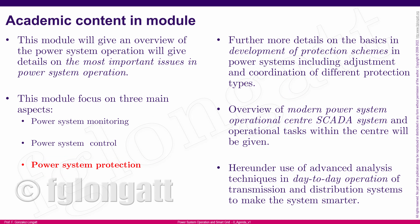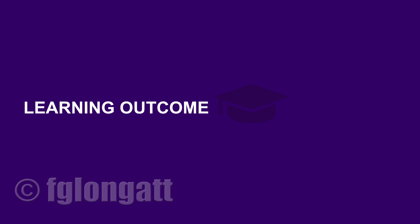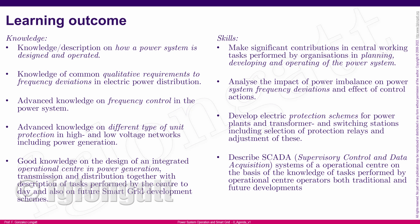Now it's time to talk about the learning outcomes. In this module, you will have two basic sets of learning outcomes: one regarding knowledge and another regarding skills. From the knowledge point of view, you will understand and be able to describe how a power system is designed and operated, with a special focus on qualitative requirements for frequency deviation, frequency control, and different types of protection units used in the electrical power system. You will also complement those concepts with an introduction to the smart grid.